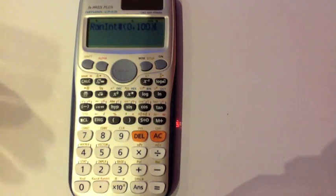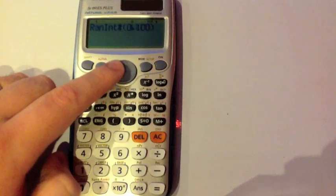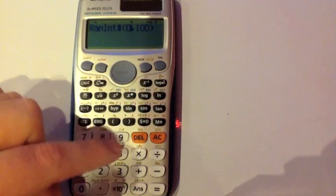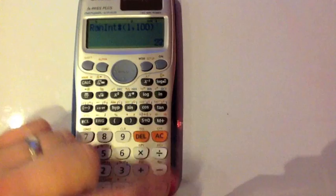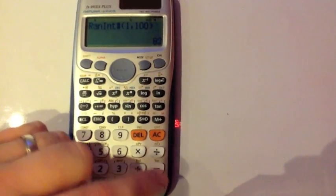If you wanted it between 1 and 100, what you would do is you would not choose 0 there, and you'd put 1. And then press equals, and a random integer is 22. A random integer is 82, and so on.